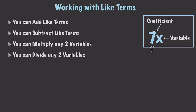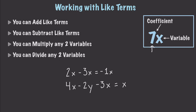And that brings us to subtracting like terms. Pretty much the same as whenever we are adding them. We can go and have 2x minus 3x, and of course that's going to give us a value of negative 1x, or just simply negative x. Also you could have 4x minus 2y minus 3x. We're going to subtract the 3 from the 4, and that just gives us a value of x — you can put the 1 on there if you'd like — minus 2y.